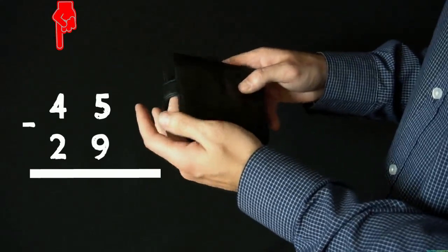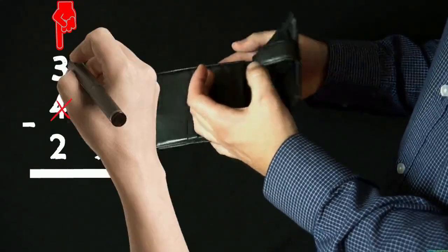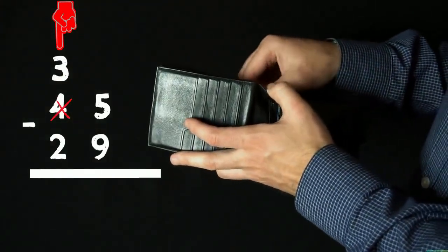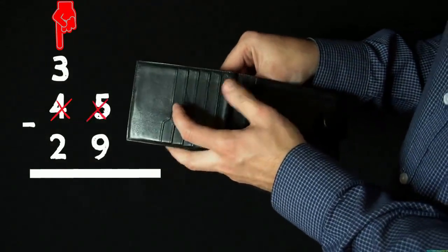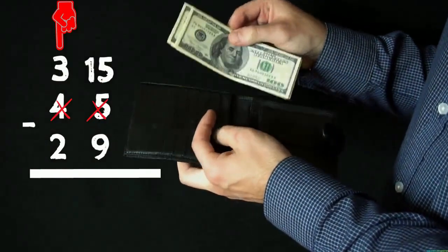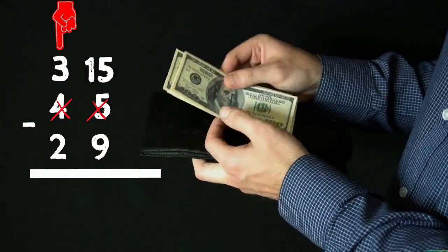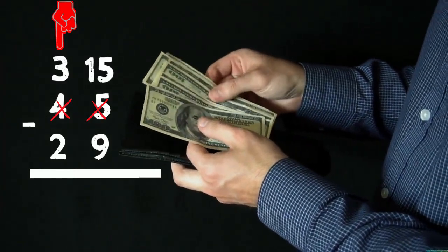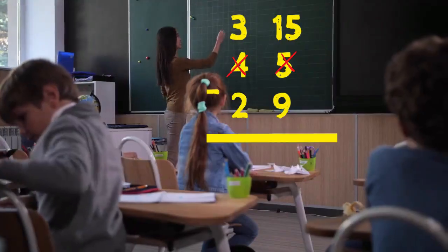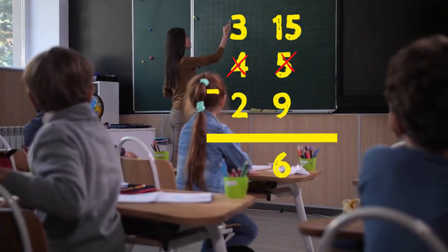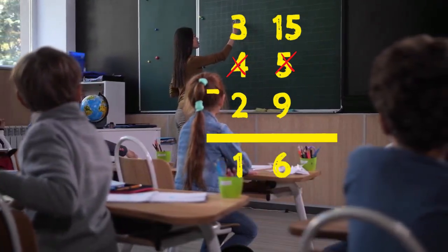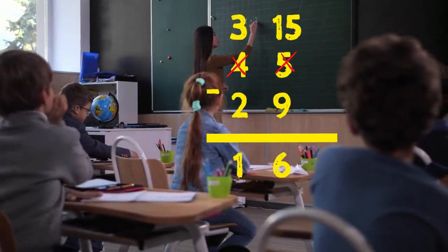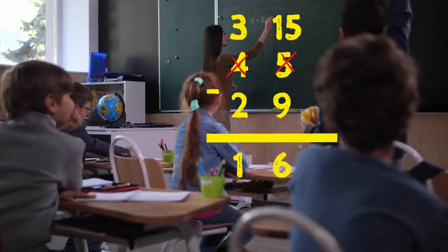So we're going to borrow a 10 from the tens place, which will change the number 4 into a 3, and then adding that 10 to our ones place will change that 5 into 15. That's much easier now. So 15 take away 9 equals 6, and then tens place: 3 take away 2 equals 1, and our answer is 16.